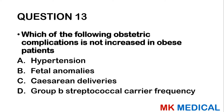Question 33: The inferior epigastric artery arises from which of the following? A — aorta. B — femoral artery. C — hypogastric artery. D — external iliac artery. This is an anatomy question — the inferior epigastric artery arises from the external iliac artery. The answer is D.